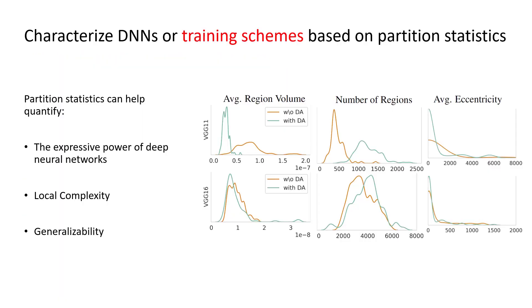SplineCam can also be used to quantify partition statistics and compare between deep networks as well as training decisions. Here we present partition statistics computed on randomly oriented 2D slices centered on 90 different test samples from Tiny ImageNet. In these plots, we compare between a VGG11 in the top row and a VGG16 in the bottom row trained with and without data augmentation.